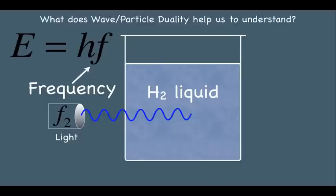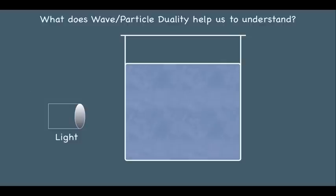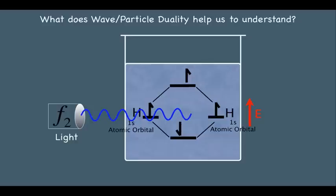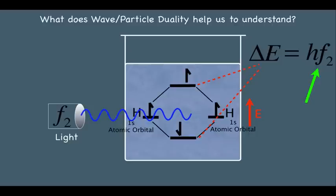Treating electrons as waves, we represent the H2 molecule with our molecular orbital diagram. When we shine light at frequency F2, the reason it is absorbed is that it takes one of the electrons and knocks it up to a higher energy molecular orbital — the sigma star anti-bonding molecular orbital. The difference in energy between the sigma bonding and sigma star anti-bonding orbitals is a fixed value, and that difference corresponds to the specific frequency F2. So we're explaining how this molecule behaves by treating electrons as waves — this is why wave-particle duality is so important.